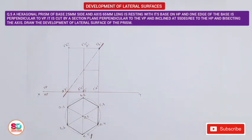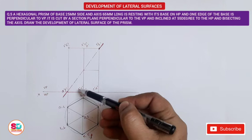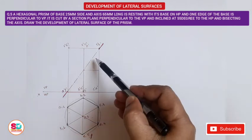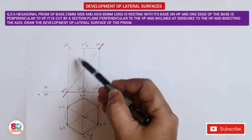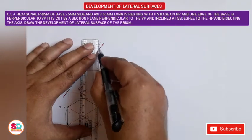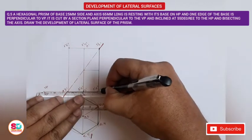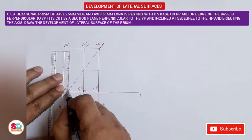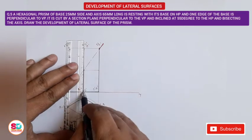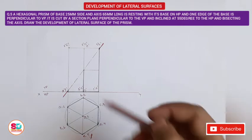We make the visible portion of the prism dark. The upper portion cut by the cutting plane is removed; only the remaining bottom portion resting on HP is drawn with continuous thick lines. We then proceed to the development of the lateral surface of this hexagonal prism.